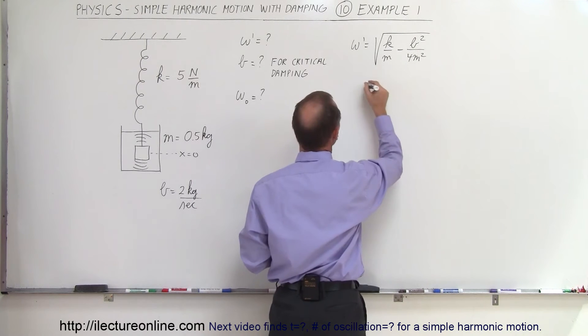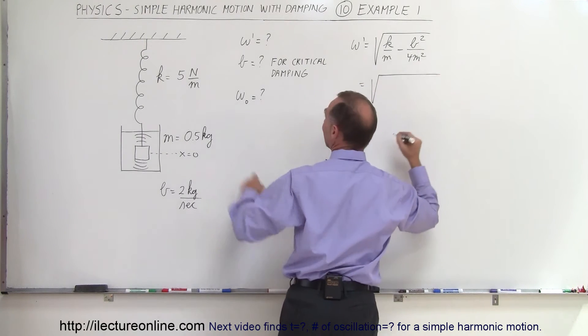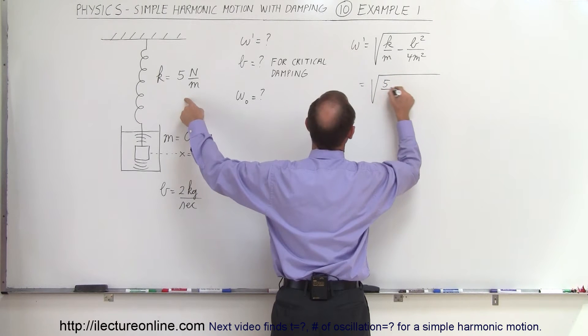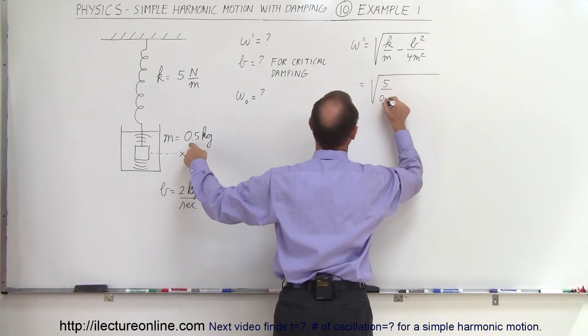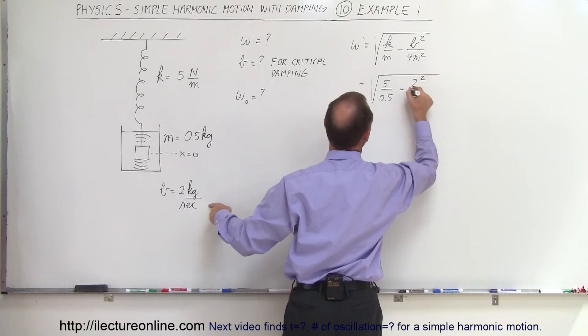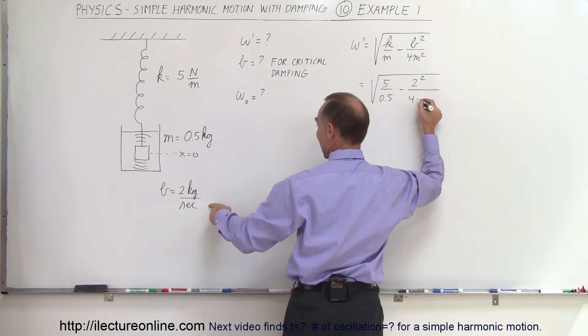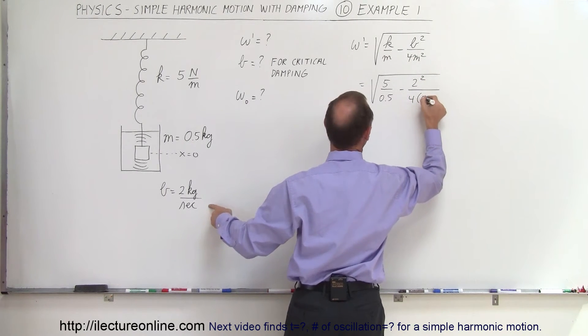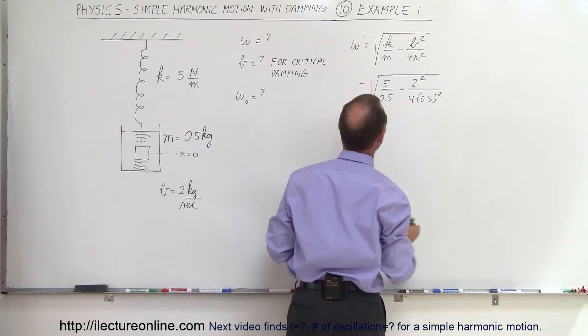Alright, plug in what we know this is equal to the square root of k would be equal to 5, m is going to be equal to 0.5 minus b which is 2, we have to square that, divided by 4 times the mass, mass is 0.5 and we have to square that as well.